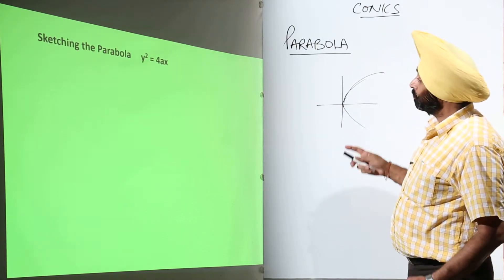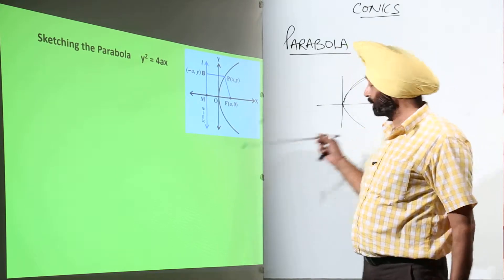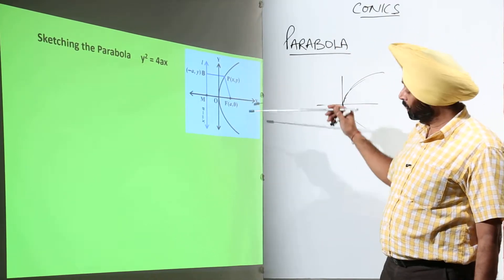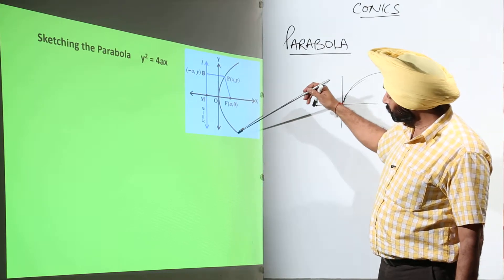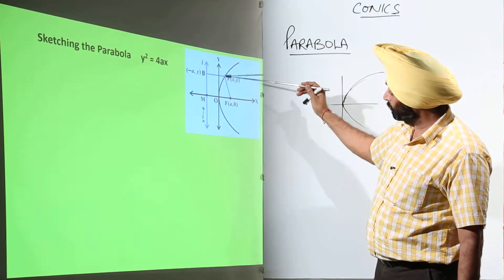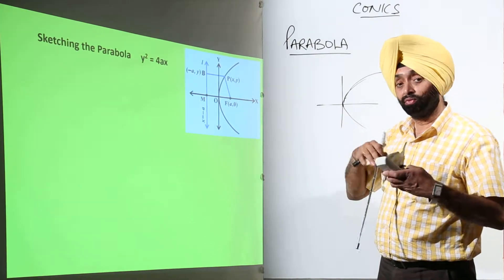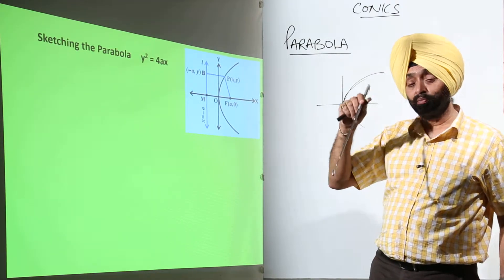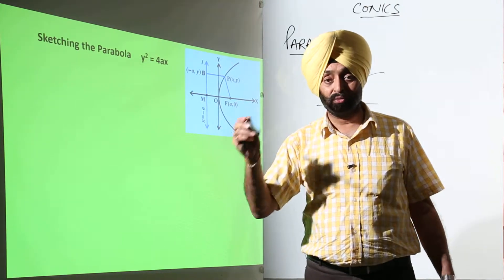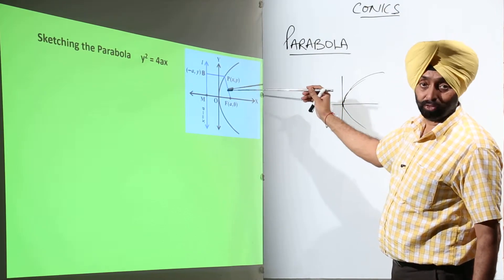For the sketching, I have drawn a figure here. This is the same figure we have already used. We have to sketch points lying on this line, but we have to go vice versa — first plot the points and then make a rough sketch. When we make the rough sketch, we will be getting this shape.